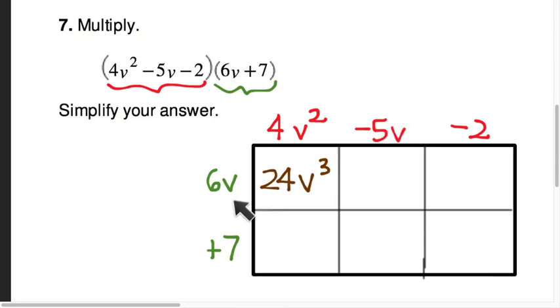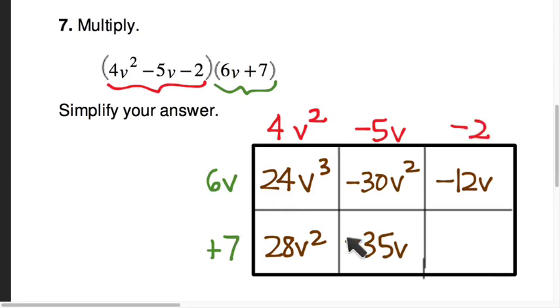-5v times 6v gives me -30v². -2 times 6v gives me -12v. 4v² times 7 gives me 28v². -5v times 7 is -35v. And then -2 times +7 is -14.